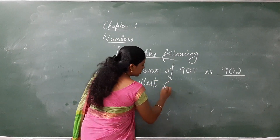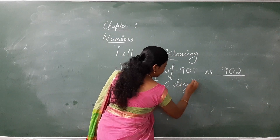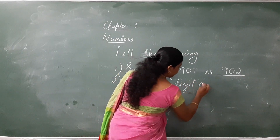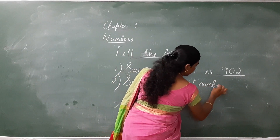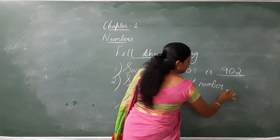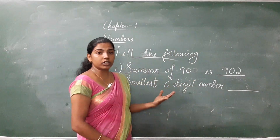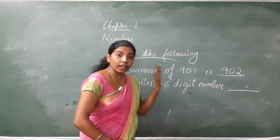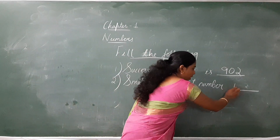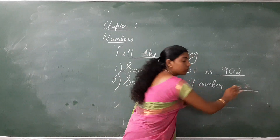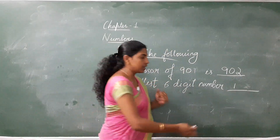Smallest 6-digit number. It is the smallest 6-digit number. How can we write the smallest 6-digit number? Write 1 and we have to put how many zeros? 5 zeros.